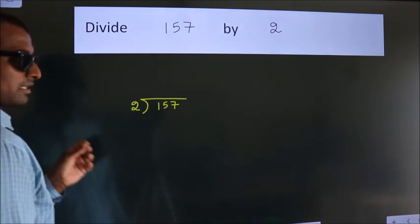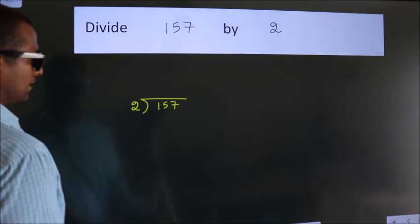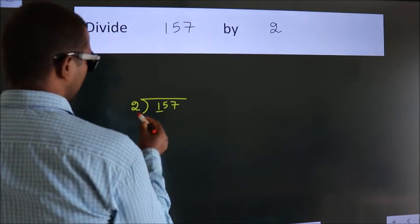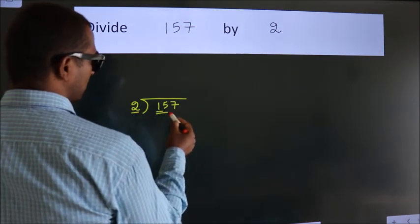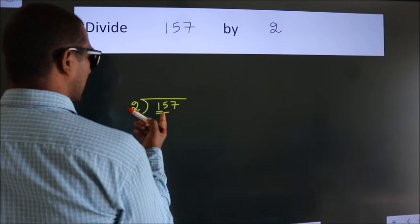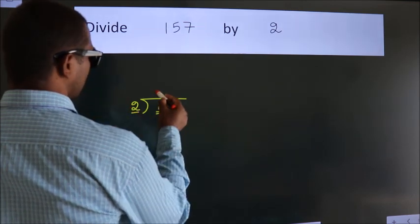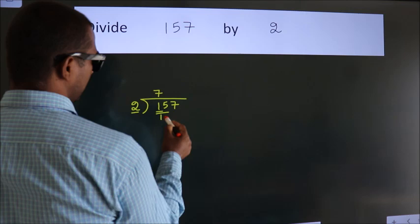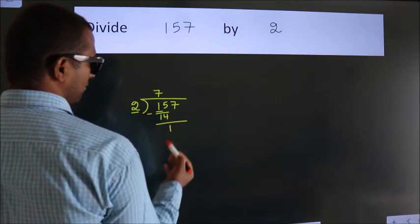This is your step 1. Next, here we have 1, here 2. 1 is smaller than 2. So we should take 2 numbers, 15. A number close to 15 in 2 table is 2 times 7, which is 14. Now we should subtract. We get 1.